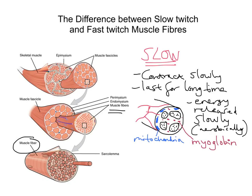So the key things to remember: slow twitch fibre has lots of blood vessels, lots of mitochondria, and uses aerobic respiration to release energy slowly. These fibres contract slowly and are therefore good for endurance activities. Now let's look at the other type of muscle fibre — the fast twitch — because they are quite notably different.